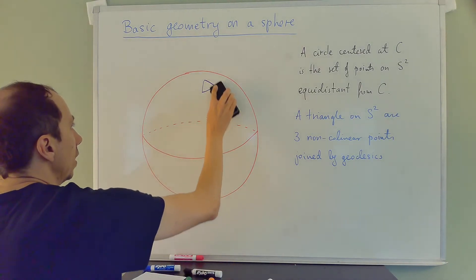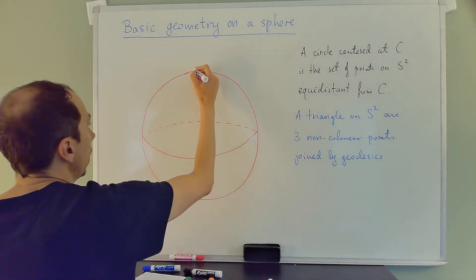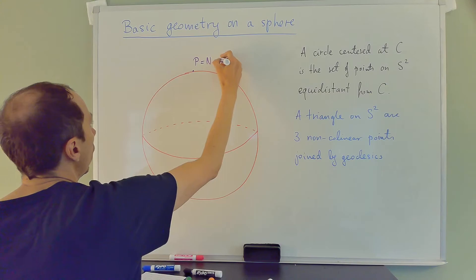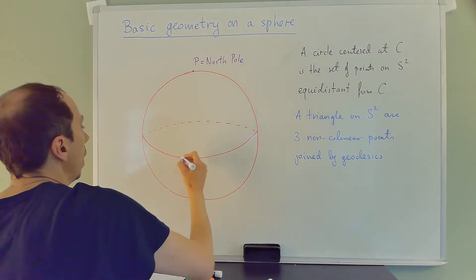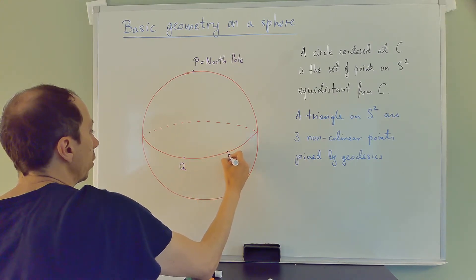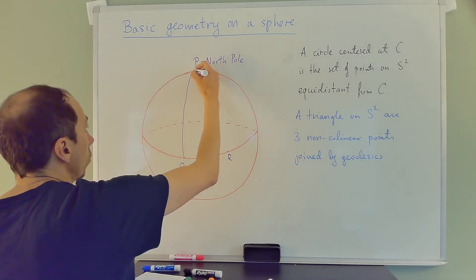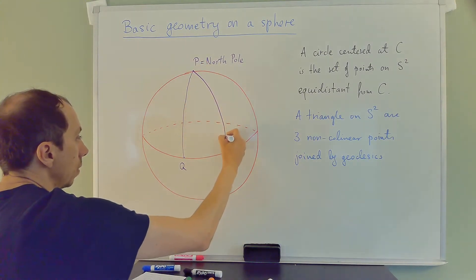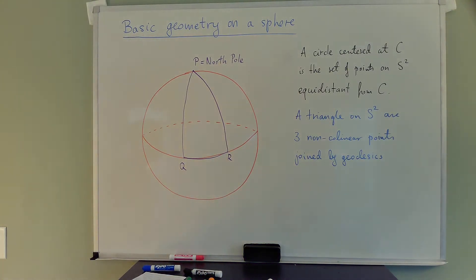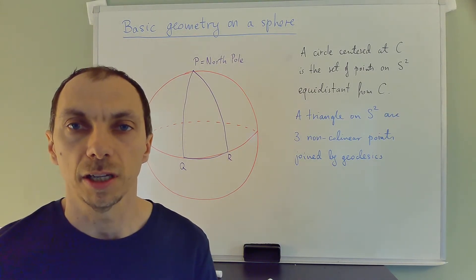But let's look at a bigger triangle. I'm going to pick point P to be the North Pole, point Q on the equator, and point R also on the equator, and connect them by arcs of great circles. That's a triangle on a sphere that looks really curvy. Now let's look at the angles of that triangle.